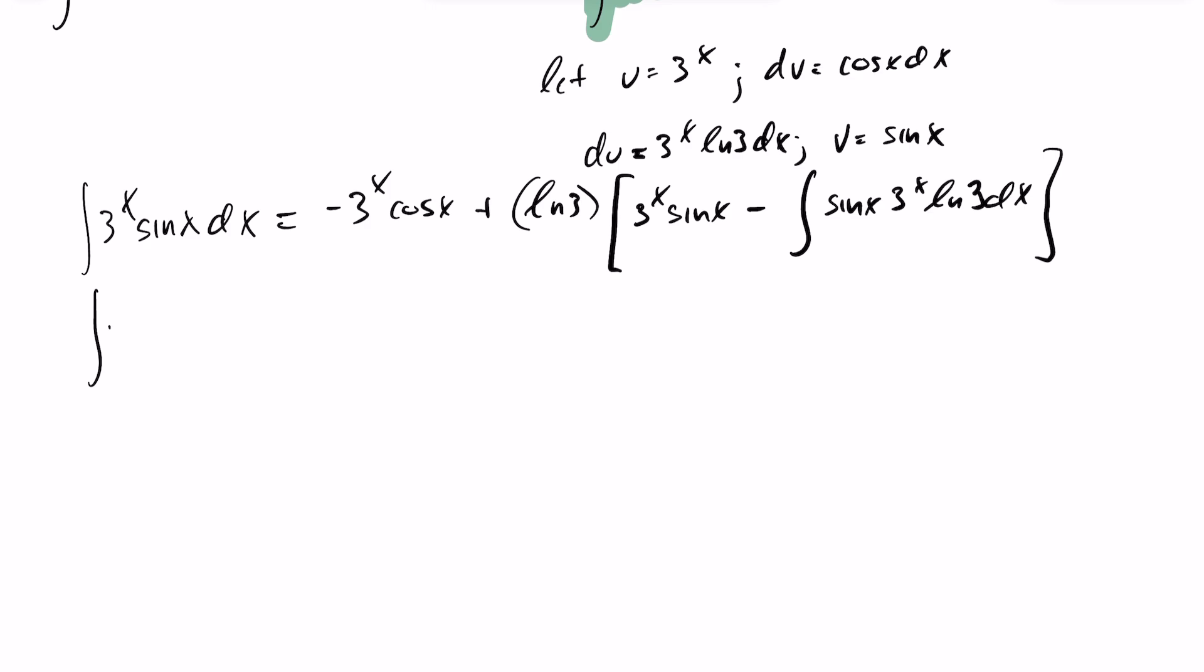Let's clean this up a bit so we can see what we have. I can distribute that ln(3), so this becomes plus ln(3) times 3^x sin(x). This will be minus ln(3) squared, because it's going to be two of those, integral of 3^x sin(x) dx.